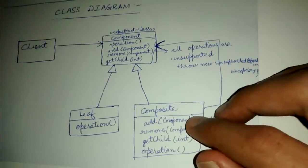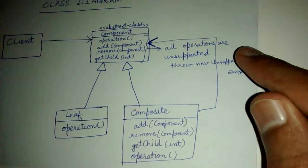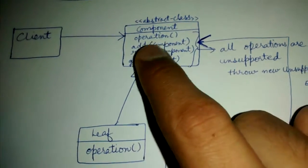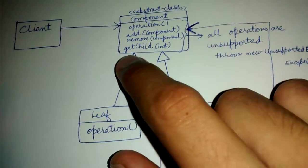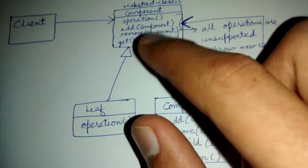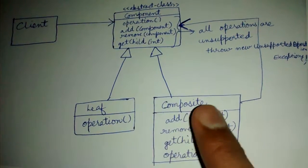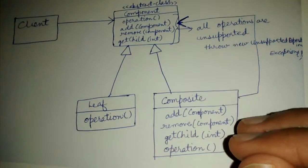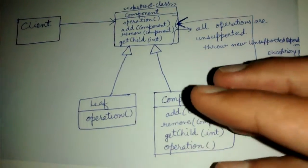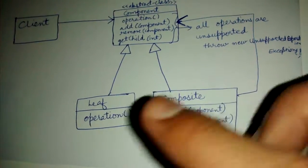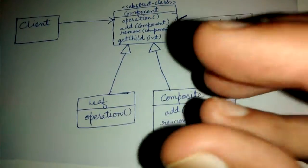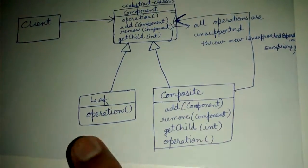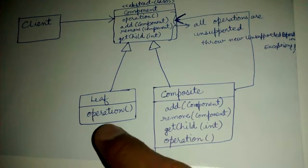In a component, operations like add, remove, and get child — adding a component is meaningful only for a composite, because in a leaf we can't add components inside it. We can add more boxes inside a composite box only; a leaf box can't contain anything inside it. So add and remove make sense only for composite.